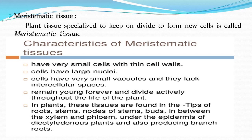If vacuoles are present in meristematic tissues, they are very small in size. This is because photosynthesis does not take place in meristematic tissues, so there is no need to store materials inside the cell. Vacuoles are considered the storage house of the cell. The cells of meristematic tissues are closely packed with no intercellular space, and they have the capacity to divide actively throughout the life of the plant.